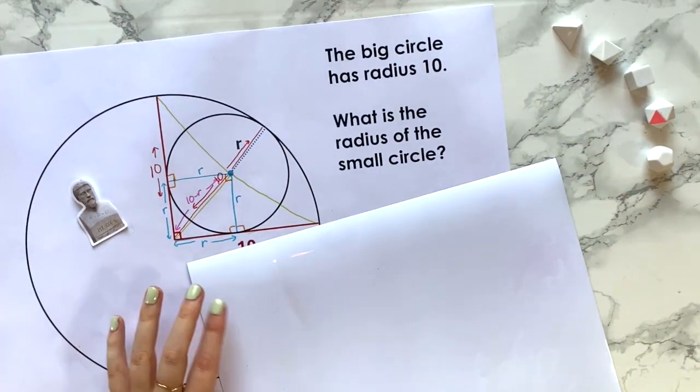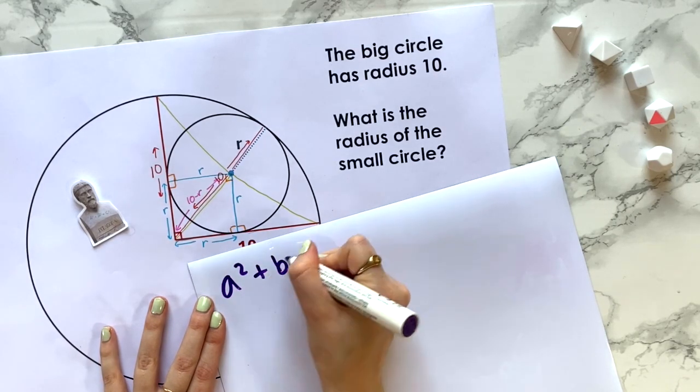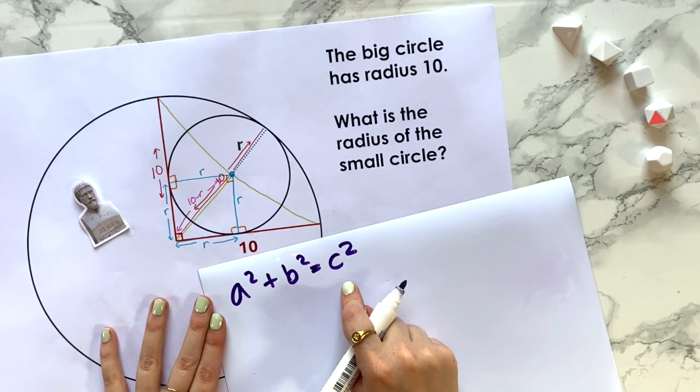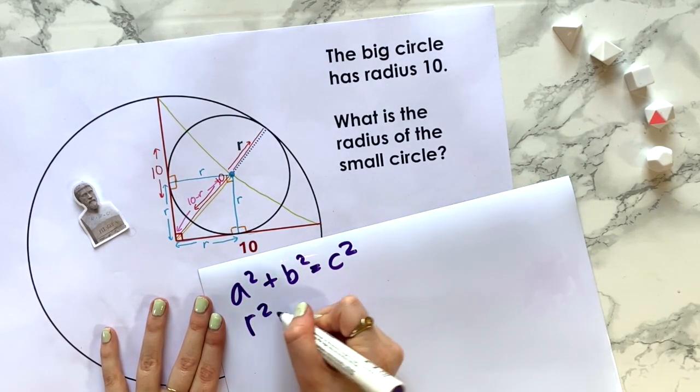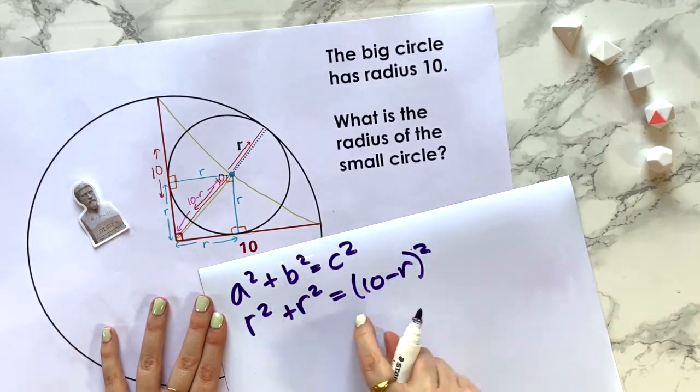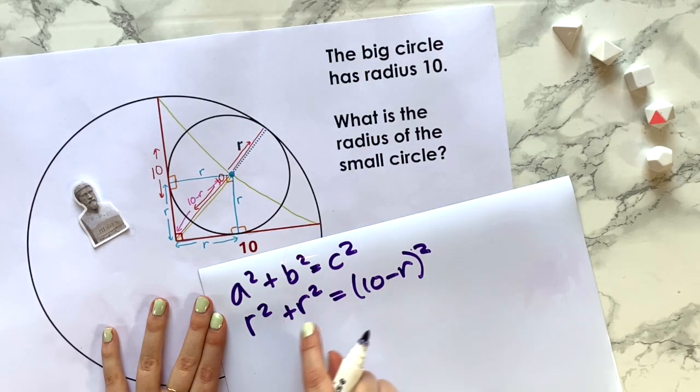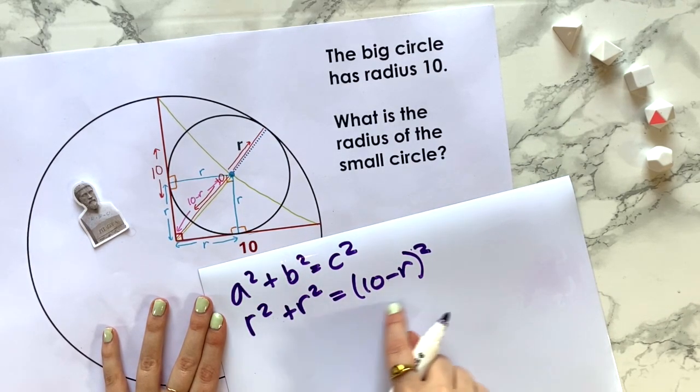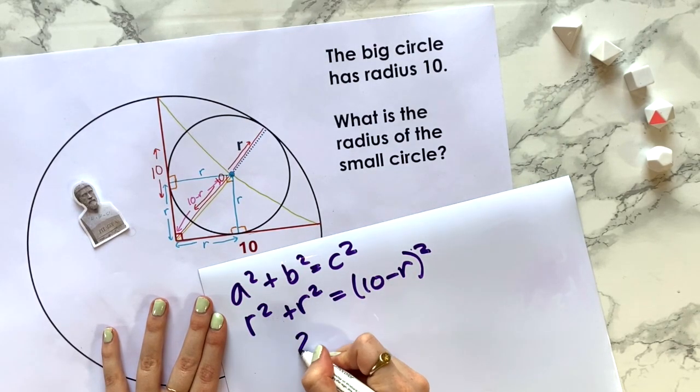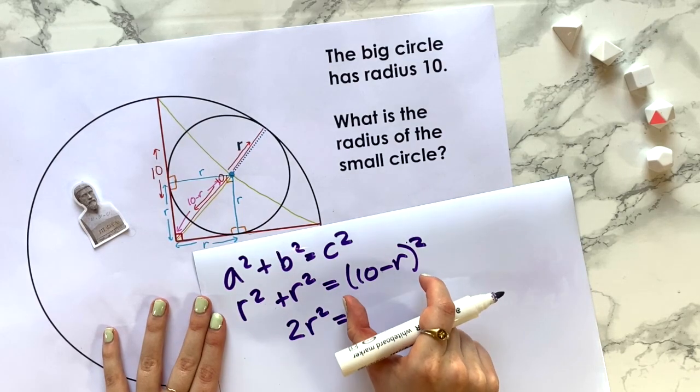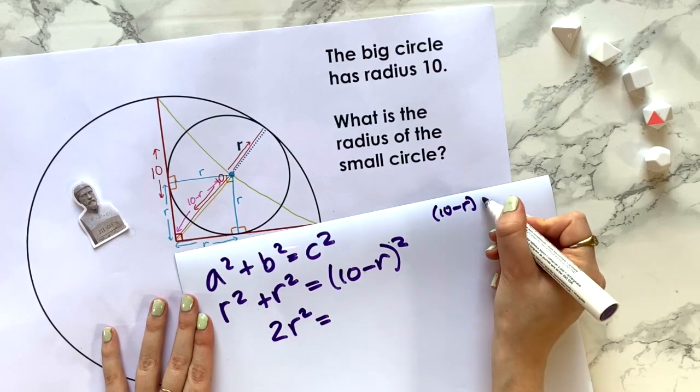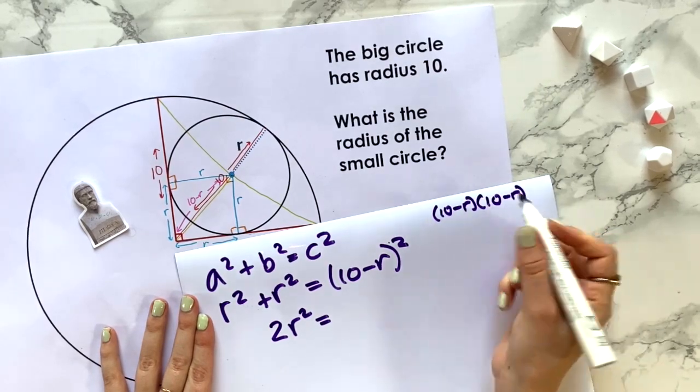Pythagoras says that a² + b² = c², where a and b are the smaller sides of the triangle and c is the longest side. So in our case, we have r² + r² = (10 - r)². We've written down an equation that just has the one unknown in r, so I'm hopeful that we can solve this and find out what r is. Let's simplify it a bit. On this side we have 2r², and on this side, well, we have a set of brackets squared.